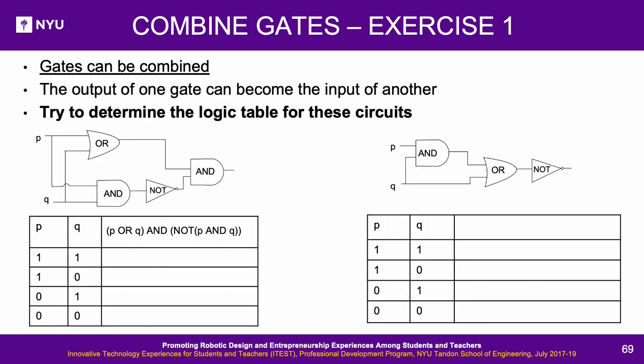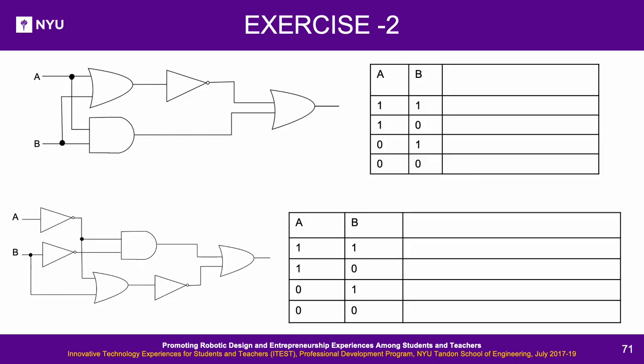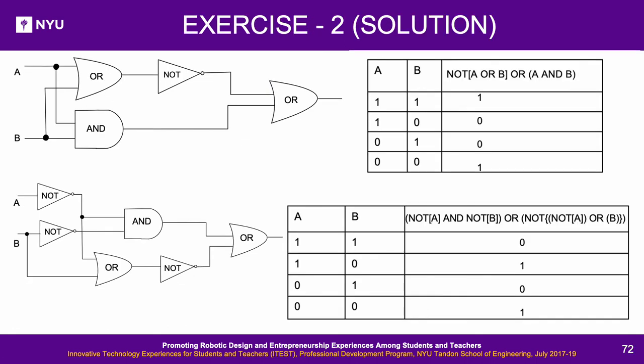Gates can be combined — the output of one gate can become the input of another. Exercise 1: Try to determine the logic table for the given circuits — pause the video to complete this exercise. Solution: Check your answers using the answers provided. Exercise 2: Try to determine the logic table for these circuits — pause the video to complete. Solution: Here is the solution for reference.